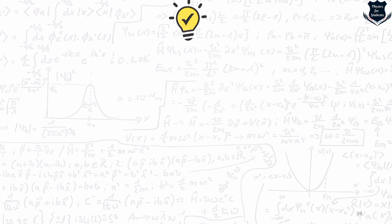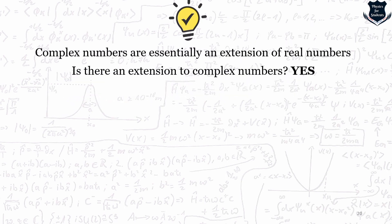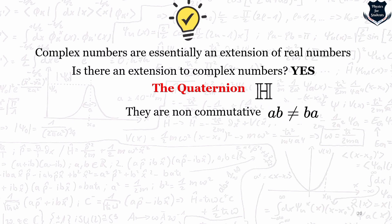Here is some fascinating trivia. We know complex numbers are an extension of real numbers — but is there an extension of complex numbers? Yes, these are called quaternions, denoted by H, and they are very useful in applied mathematics, physics, computer graphics, and computer vision. Importantly, quaternions are non-commutative, meaning a times b is not equal to b times a.